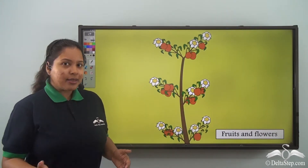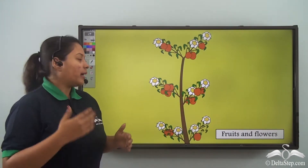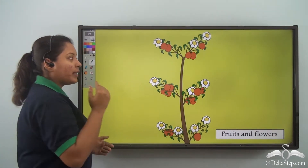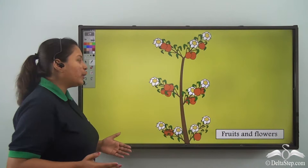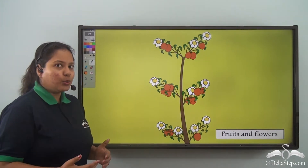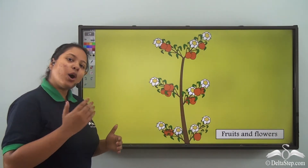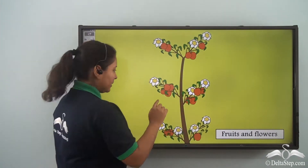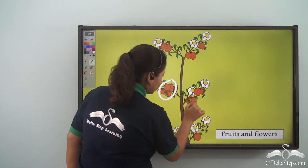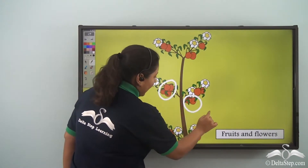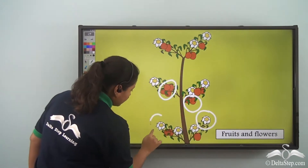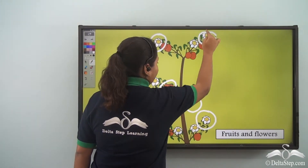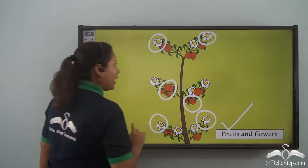"Fruits and flowers also grow on me — hey, don't miss out on me!" The plant is telling us that not only the roots, stem, branches, or leaves, but fruits and flowers also grow on it. These are the fruits and these are the flowers. So, a plant also has fruit and flower.